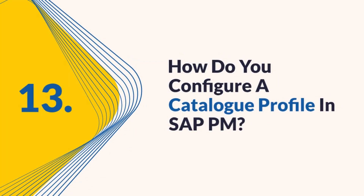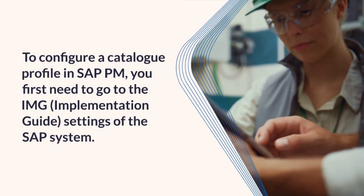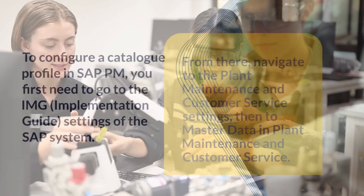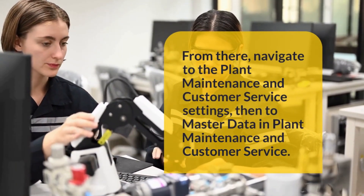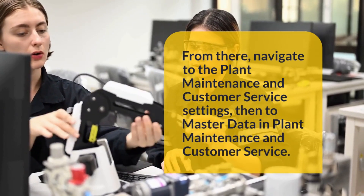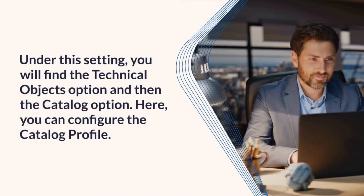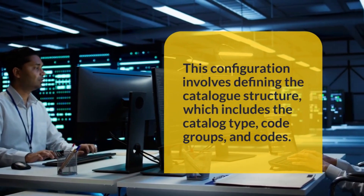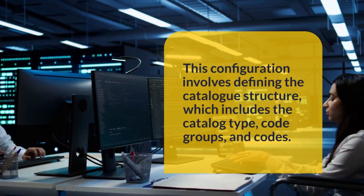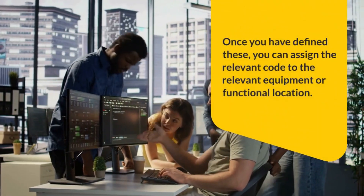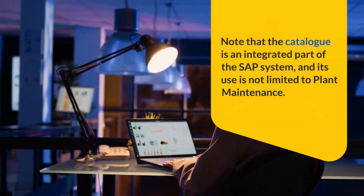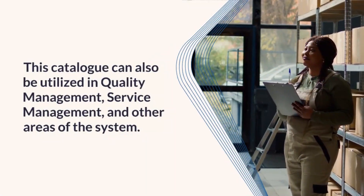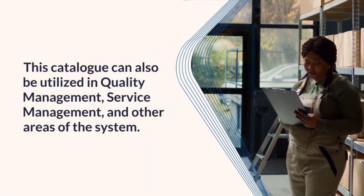Question 13: How do you configure a catalog profile in SAP PM? To configure a catalog profile, go to the IMG (Implementation Guide) settings of the SAP system, navigate to Plant Maintenance and Customer Service settings, then to Master Data in Plant Maintenance and Customer Service. Under Technical Objects, find the Catalog option where you can configure the catalog profile by defining the catalog structure, including catalog type, code groups, and codes. Once defined, assign the relevant code to the applicable equipment or functional location. Note that the catalog is also utilized in quality management, service management, and other SAP areas.